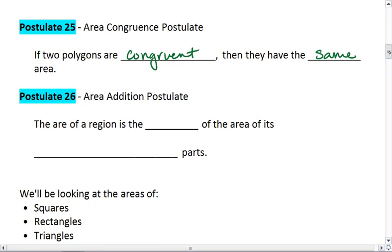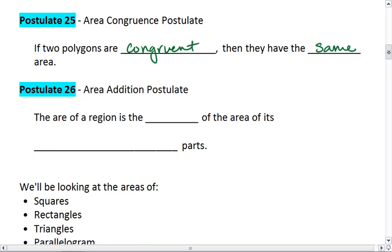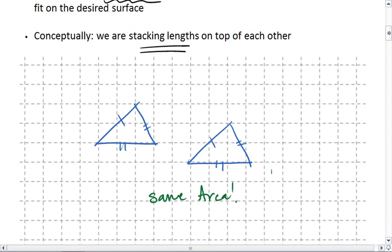Postulate 26 is the area addition postulate. It tells us that the area of a region is the sum of the areas of its non-overlapping parts. So if I draw a figure up here that's a triangle on top of a rectangle, I can find the entire area by finding the area of the rectangle plus the area of the triangle.